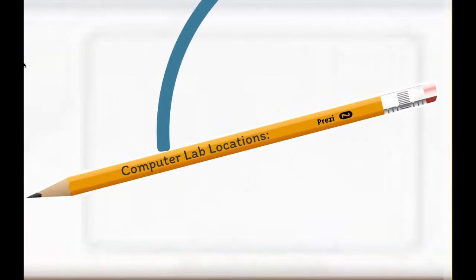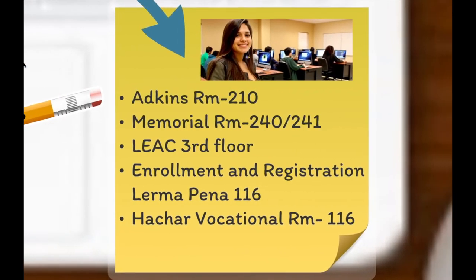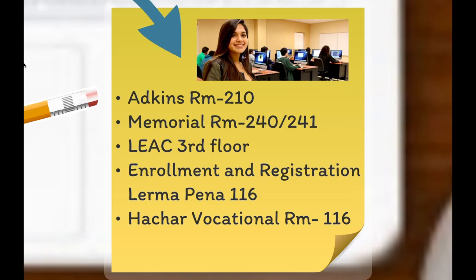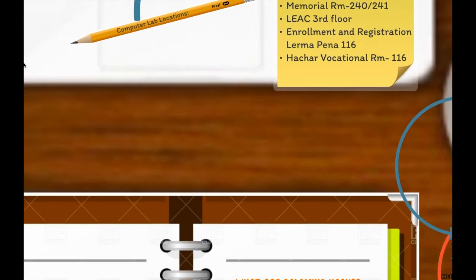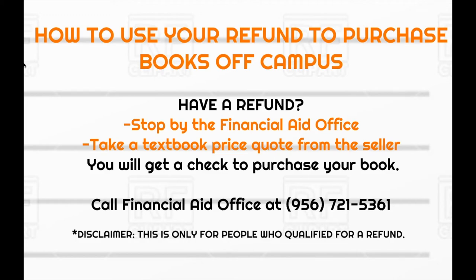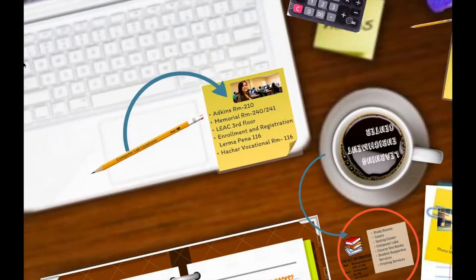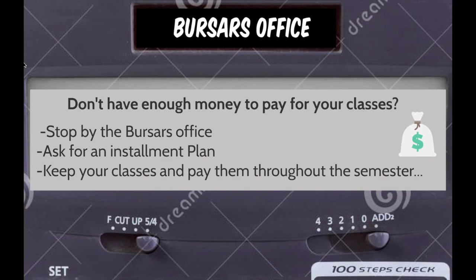Some computer labs on campus are in the Atkins building room 210, Memorial Hall rooms 240 and 241, the LIAC third floor, Enrollment and Registration in the Lerma Peña building room 116, and Hatcher Vocational room 116. If you have a refund, you can use it to purchase a book off campus by stopping by the Office of Financial Aid and taking a textbook price quote from the seller. If you qualify, your refund money will be used to purchase the book. If you don't have enough money to pay for your classes, you can stop by the Bursar's Office and ask for an installment plan, allowing you to keep your classes throughout the whole semester while still paying for them.